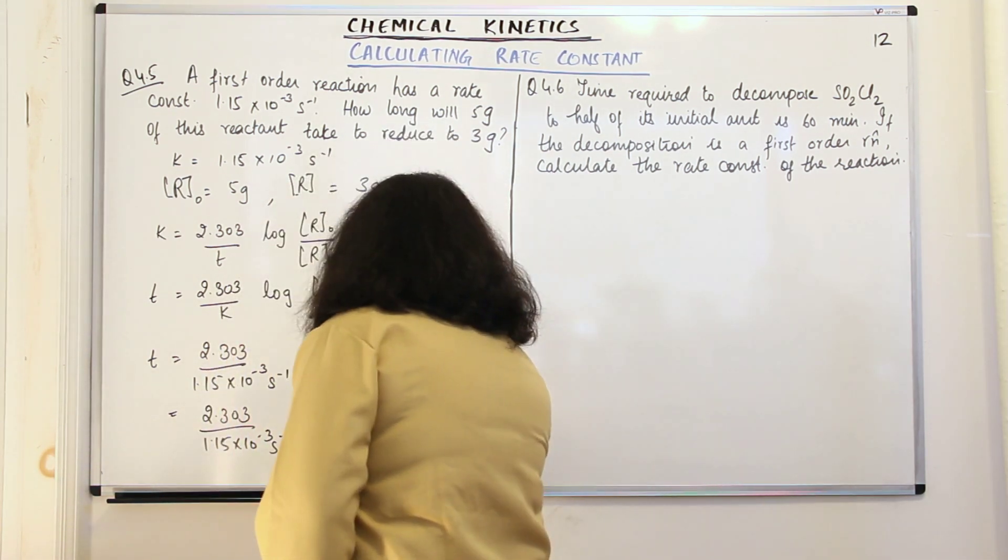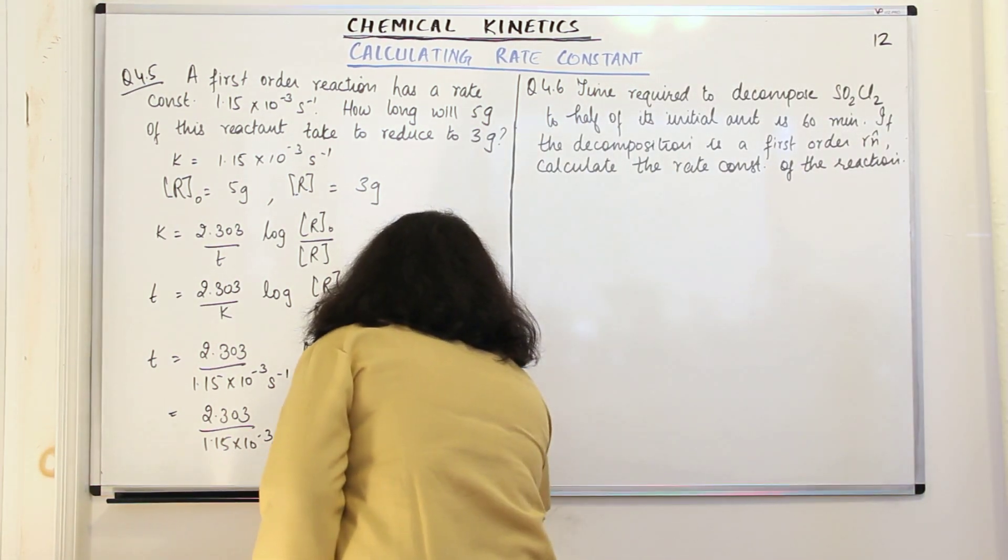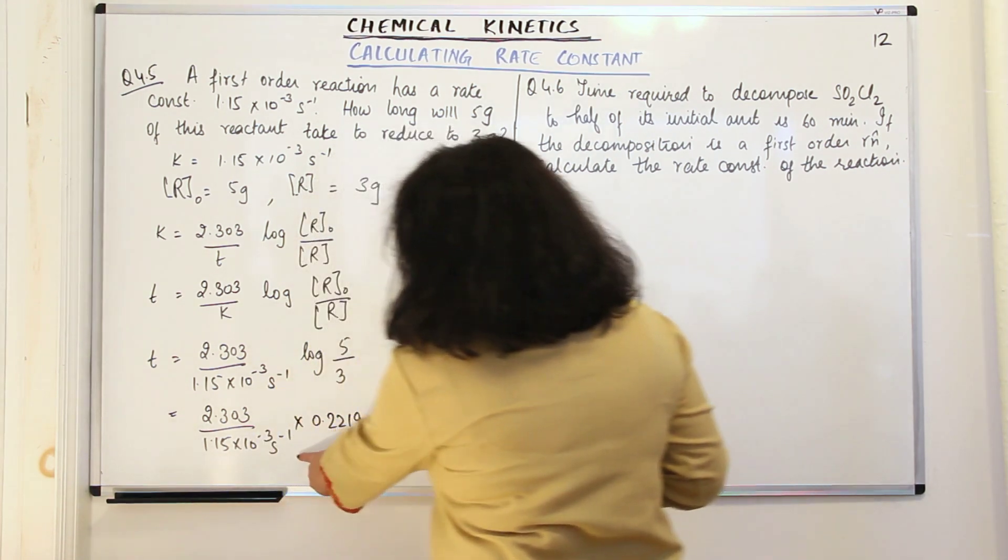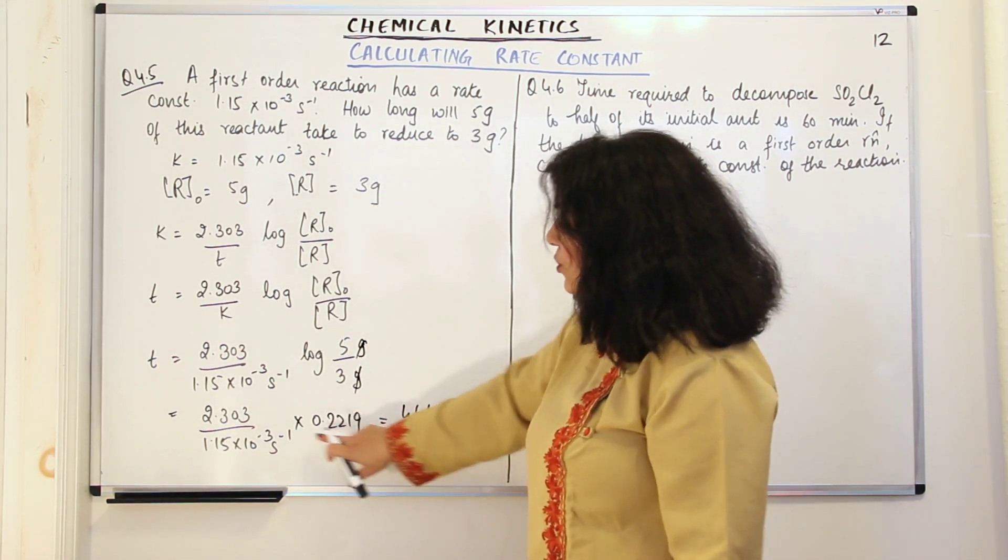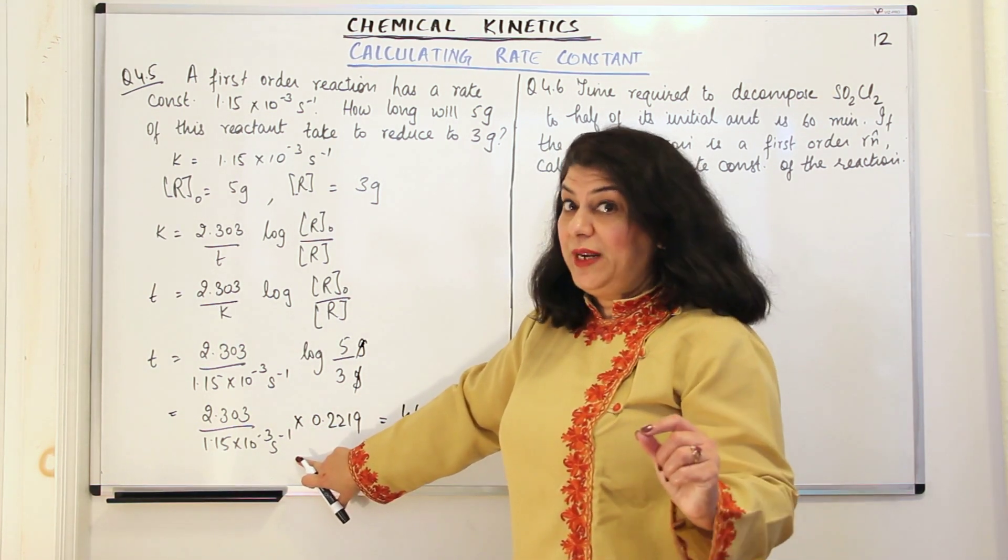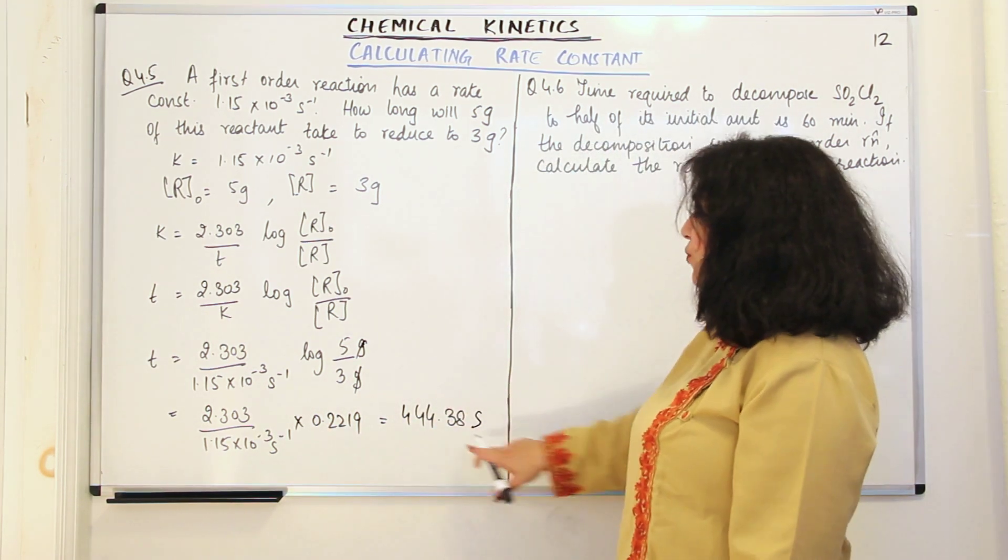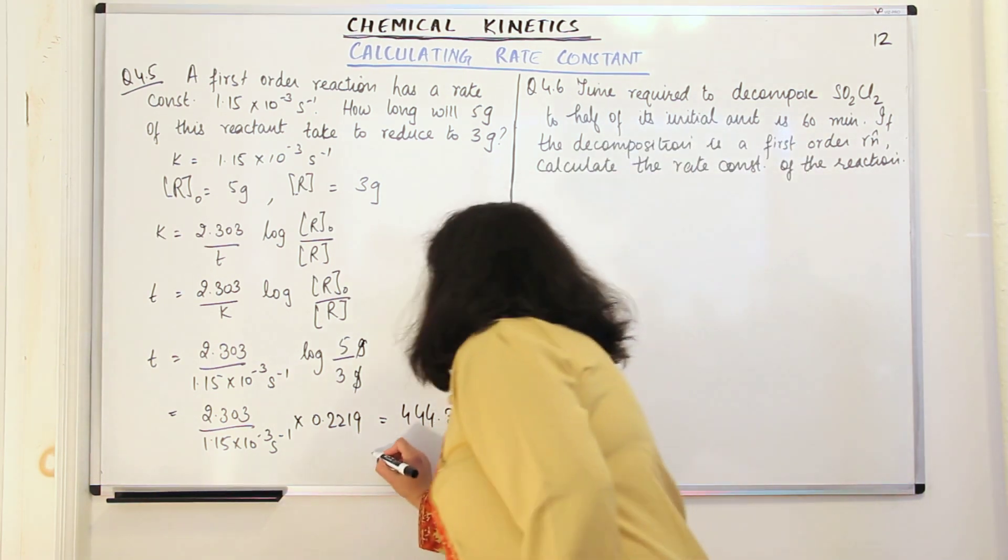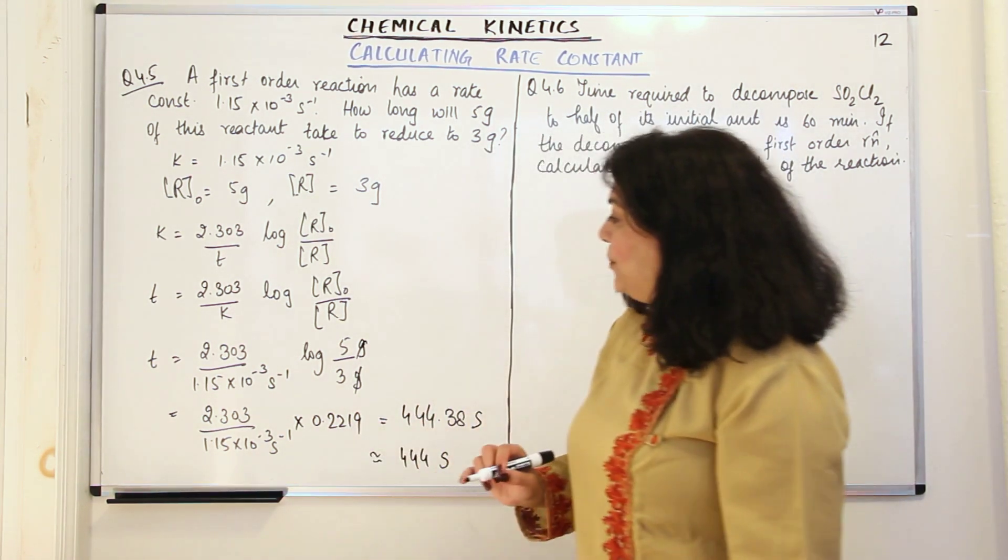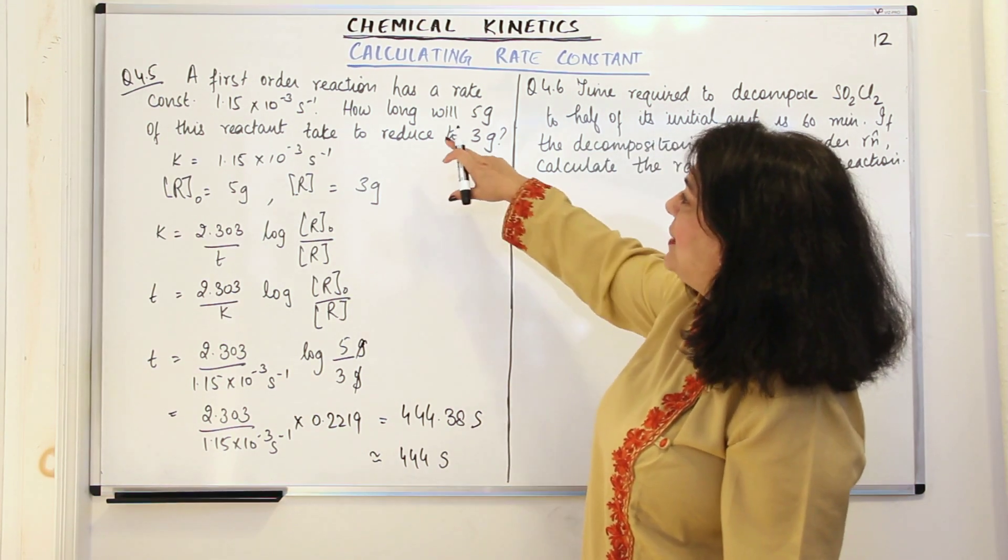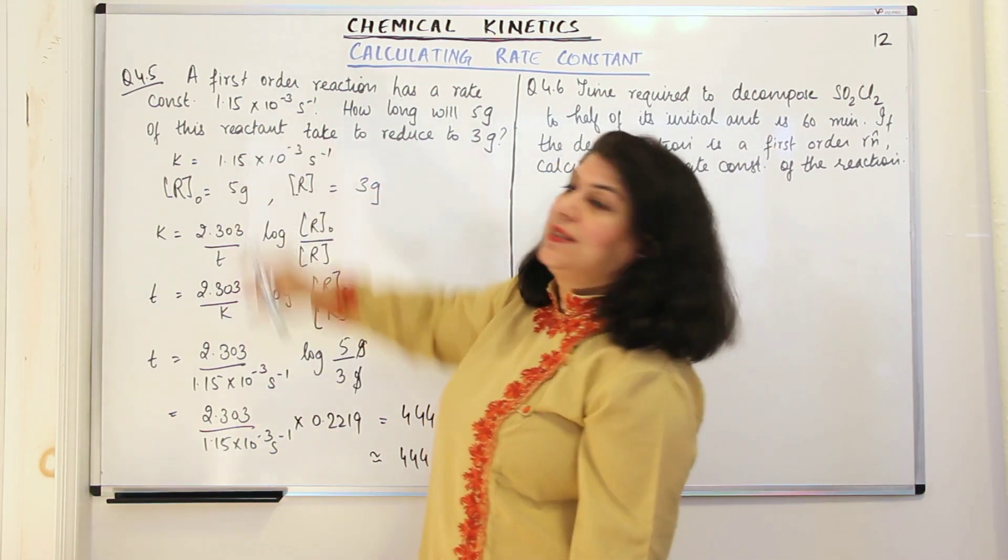When you solve all of this, you'll get the answer which is 444.38 seconds. What will the unit be? 5 grams upon 3 grams, the grams will get cancelled. So the only unit you're left with is second inverse in the denominator, which comes up in the numerator and becomes equal to second. So the answer is 444.38 seconds or approximately 444 seconds. This would be the time required for 5 grams of the reactant to be reduced to 3 grams.